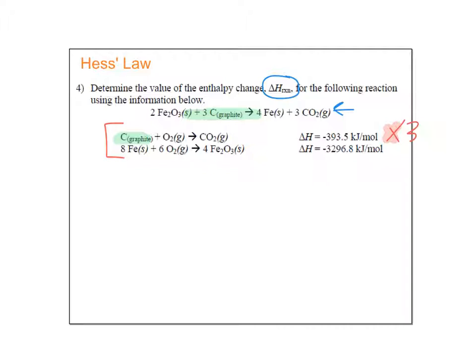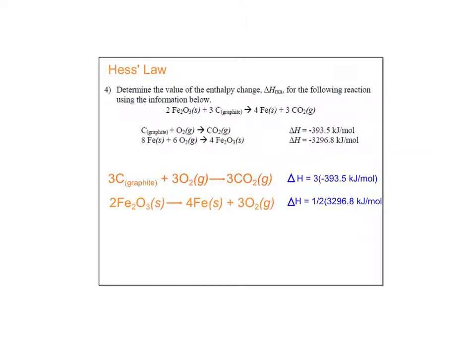Then I see iron by itself here. Iron by itself. But we only have half as much in the overall, 4 Fe solid and 8 Fe solid. So I'm going to flip and half my second reaction. For the top one, I'm going to multiply all of the coefficients by 3 and multiply delta H by 3. For the bottom one, I'm going to reverse the reaction and cut the stoichiometry in half, which means I change the sign of my delta H and cut the delta H in half.